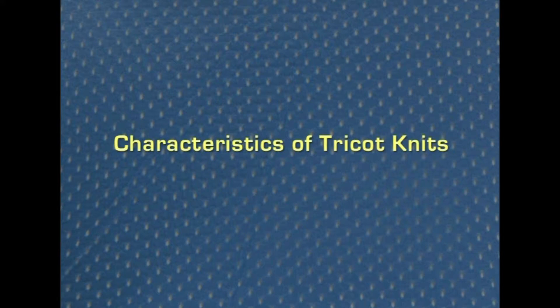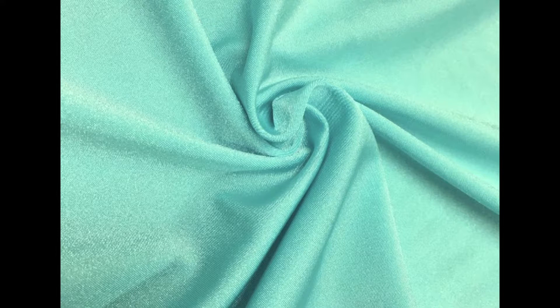Napped or brushed tricot is a plain tricot that has been given a napped finish. Tricot fabrics have many good attributes. They are porous and permit passage of water vapor and air for body comfort. They also offer bulk without undue weight. Tricot fabrics are soft, wrinkle resistant and have good drapability. They have controllable elasticity and do not run or fray. Tricot construction contributes to good abrasion resistance and high bursting and tearing strength.